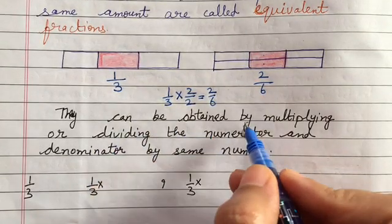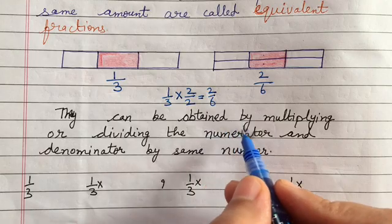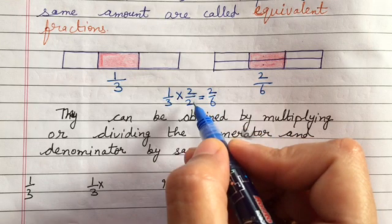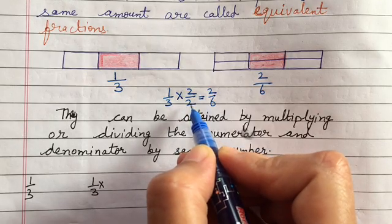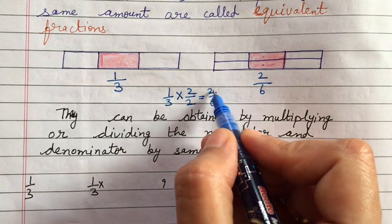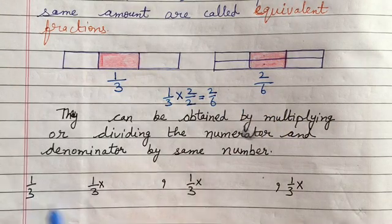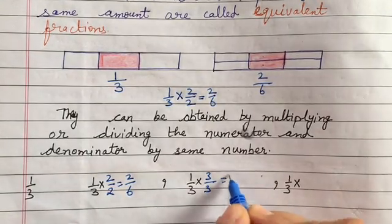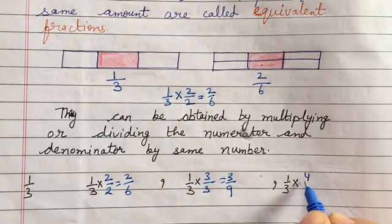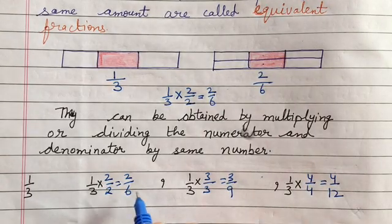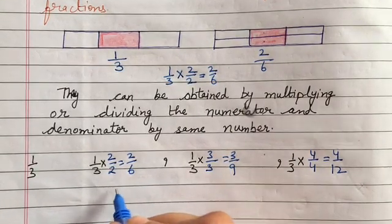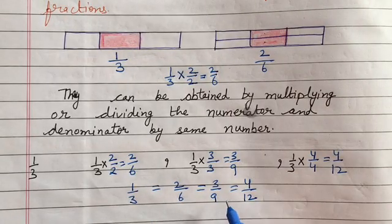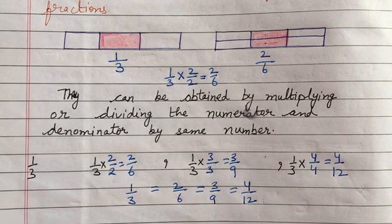Equivalent fractions can be obtained by multiplying or dividing the numerator and denominator by the same number. Like we just did — I multiplied numerator and denominator by 2, so 1 by 3 became 2 by 6. If multiplied by 3/3, I get 3 by 9. If multiplied by 4/4, I get 4 by 12. So 1 by 3, 2 by 6, 3 by 9, and 4 by 12 are all equivalent fractions as they represent the same amount.